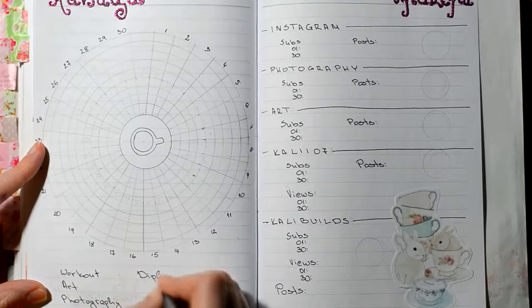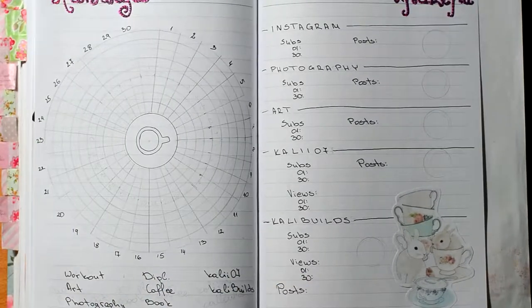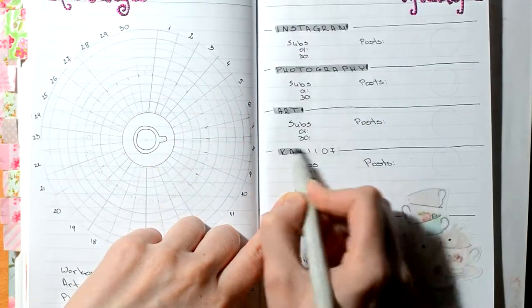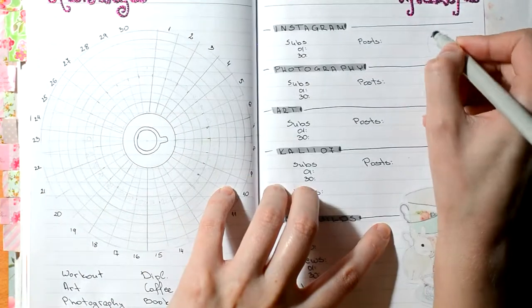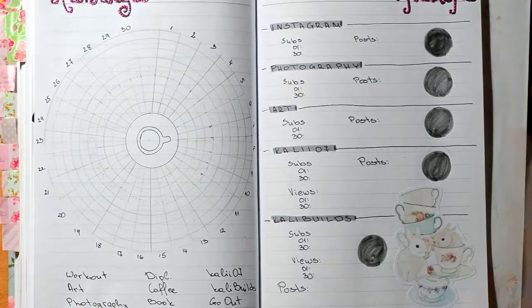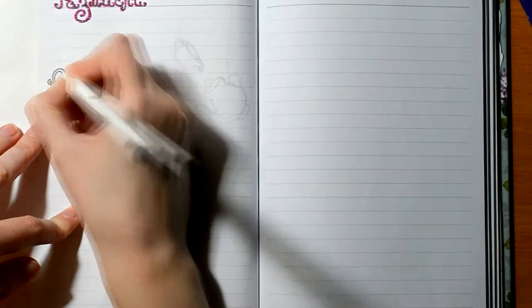On the other side is actually my last page where I do kind of like a brain dump, and I call it just Thoughts on top. I usually write down quotes that I really like or just thoughts that I've had through the month, just anything that inspires me or makes me sad or happy or just leaves an impression on me.